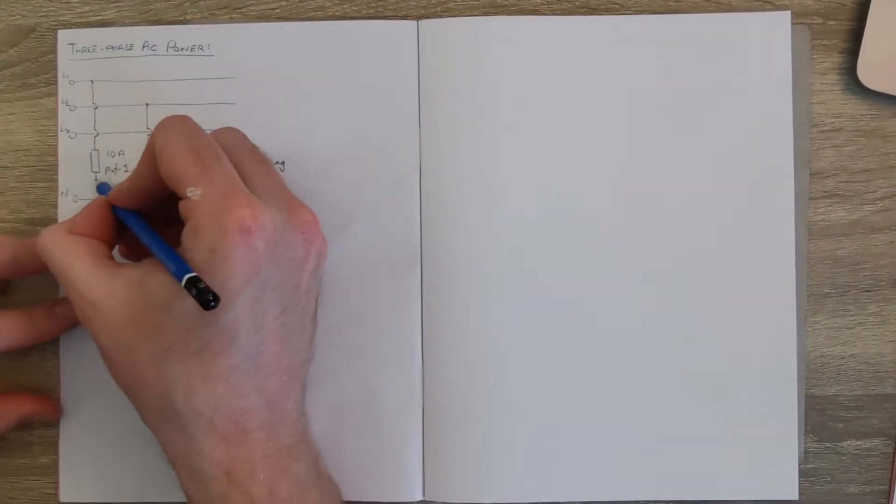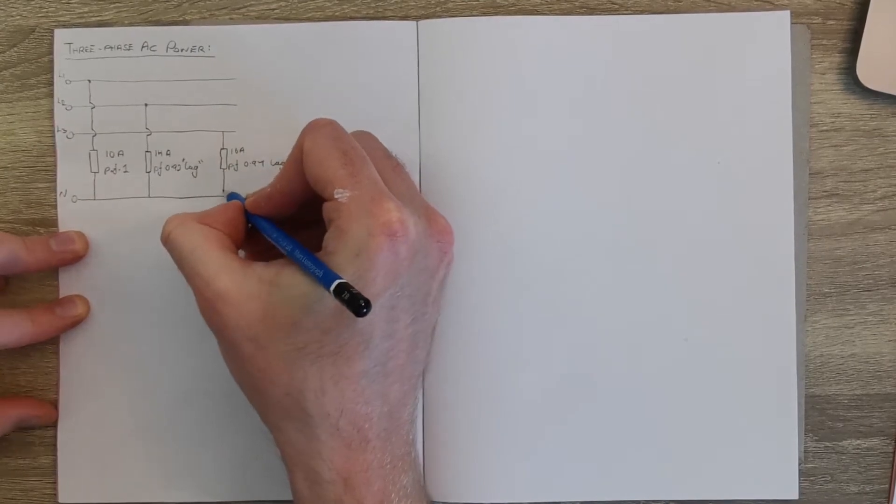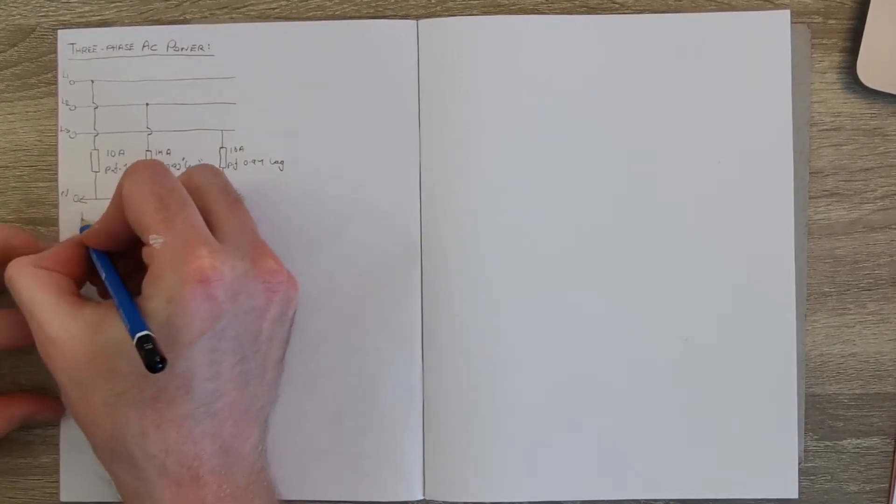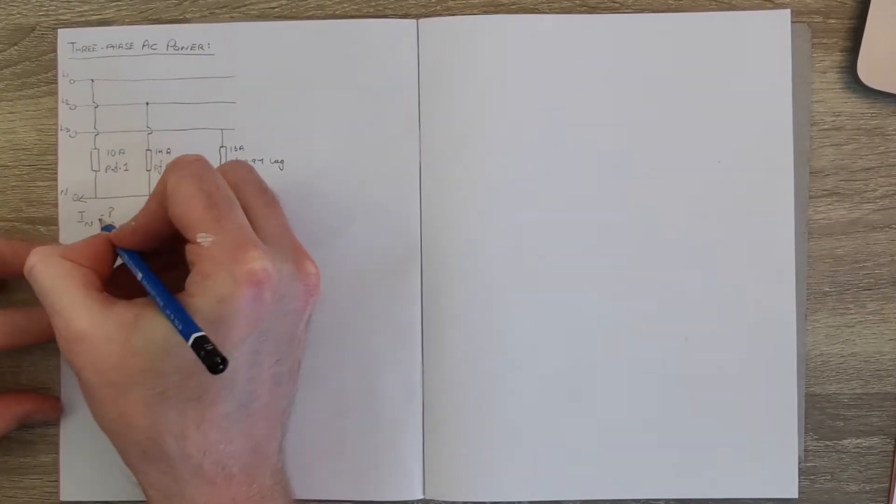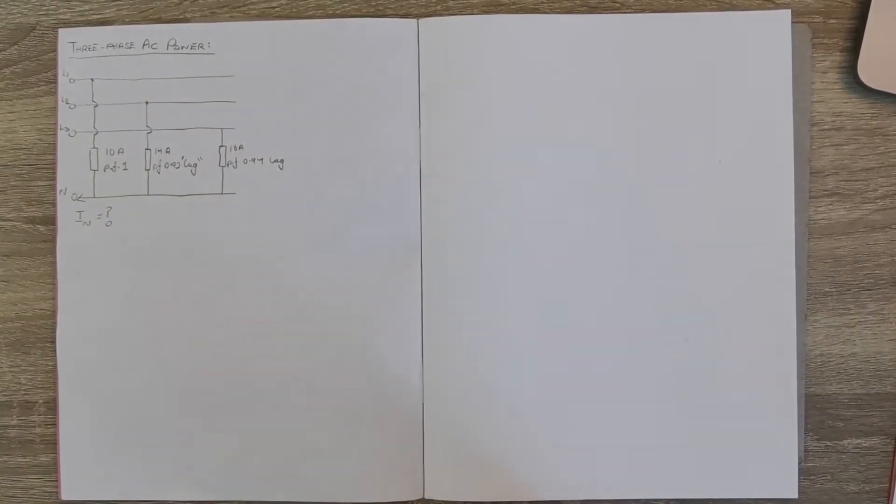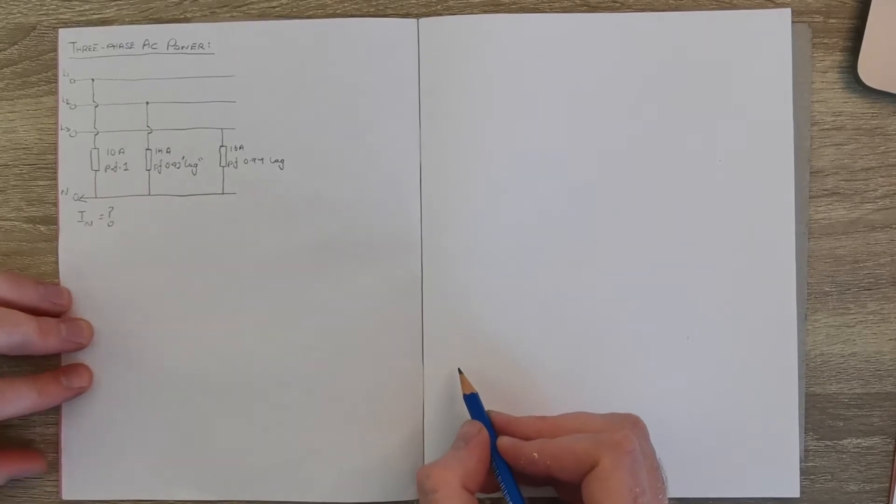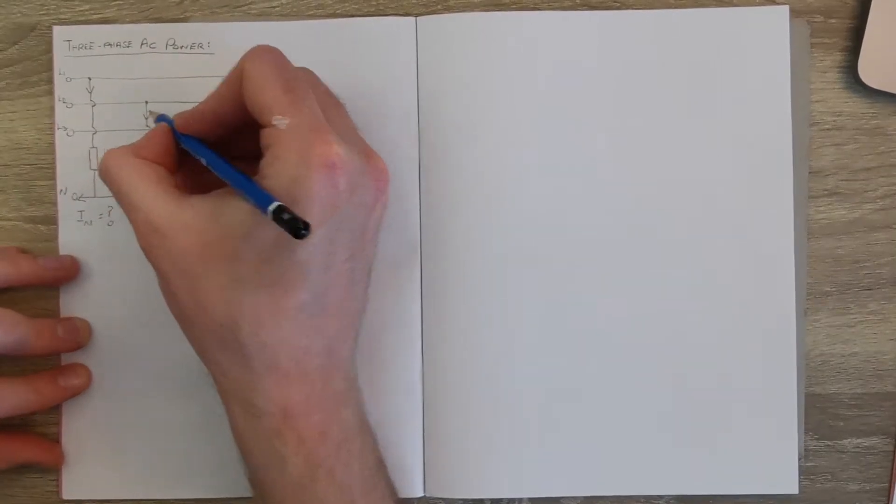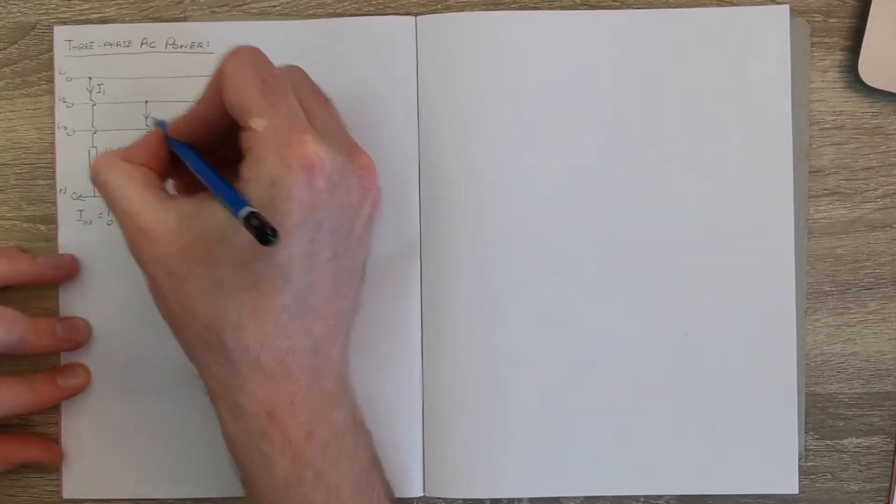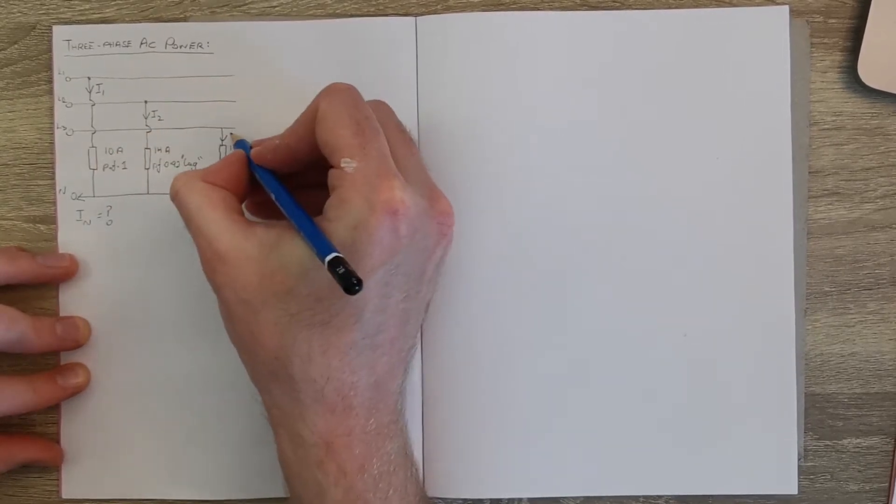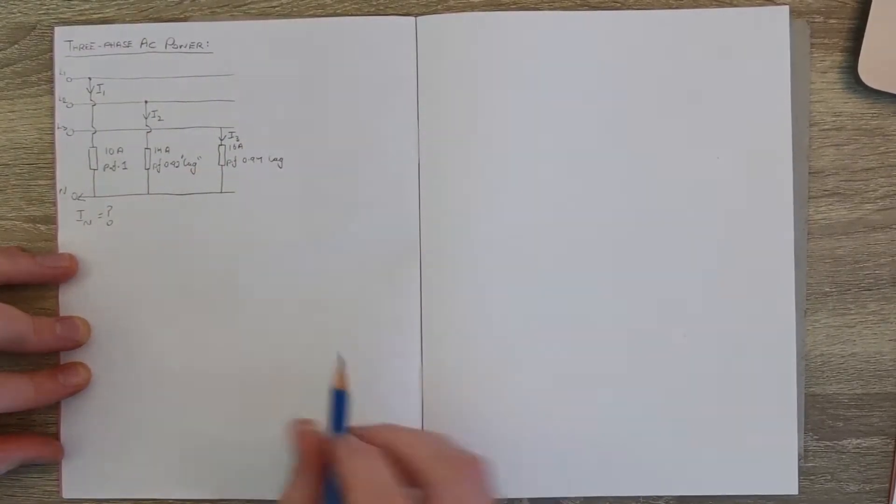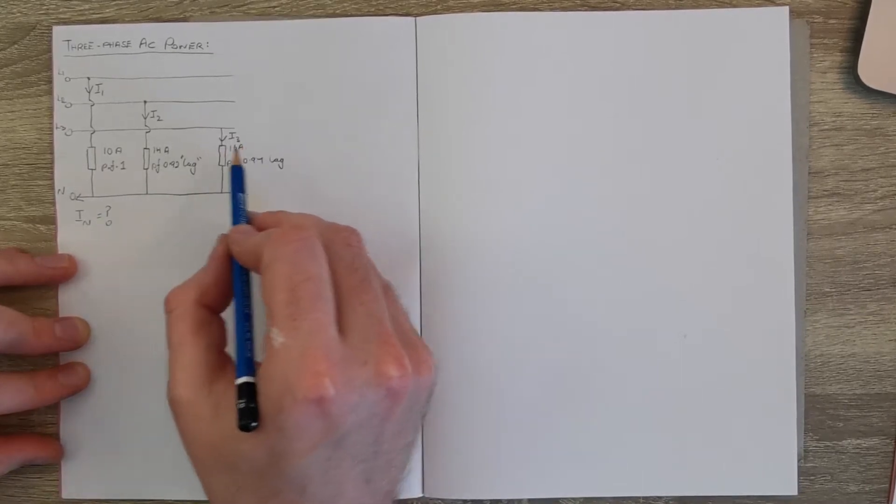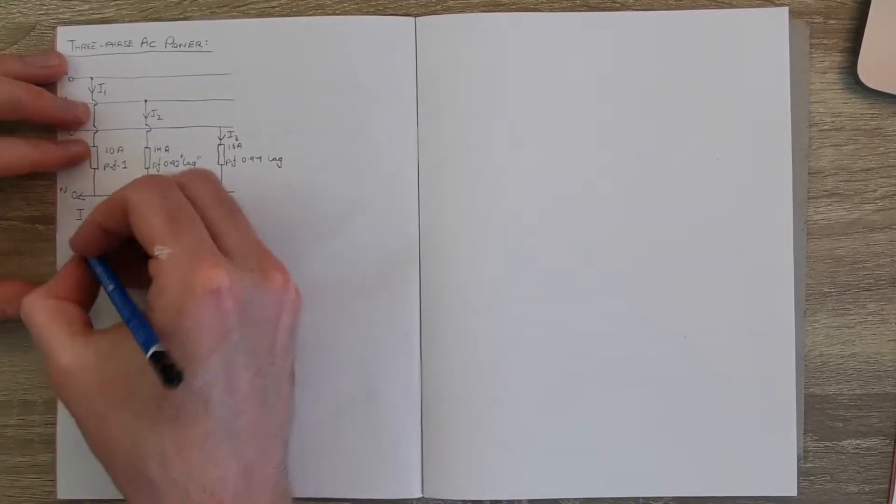These are all connected to the neutral. So the question is asking you, based on these three loads, what will the current in our neutral be? So what will IN be? It just looks for the magnitude of this. To approach this question what we do is we take each load individually, that'll be i1, i2, i3. We work out these individually, then we work out the horizontal and vertical components, and then using those we work out IN.